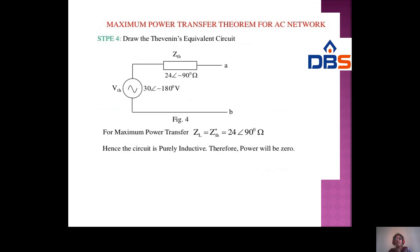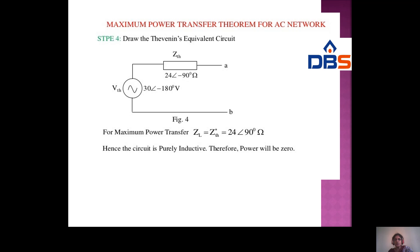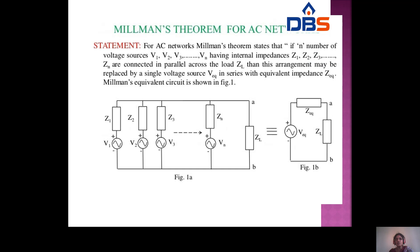We now have VTH = 30∠−90° and ZTH = 24∠−90°. For maximum power transfer in AC, the load impedance ZL equals the complex conjugate of ZTH, so ZL = 24∠+90°. Since the circuit is purely inductive under this condition, the power transferred is zero. This completes the maximum power transfer theorem.